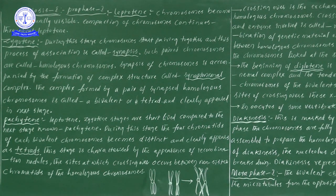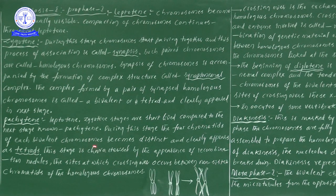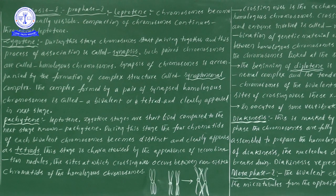During this stage, the four chromatids of each bivalent chromosome become distinct and clearly appear as Tetrads. Now due to this distinction, the chromosomes condensation process continues, and during this stage the four chromatids of chromosomes become distinct and clearly appear as Tetrads. This stage is characterized by the appearance of Recombination Nodules. The main important points to remember in Pachytene are: first, the clear appearance of Tetrads; second, the appearance of Recombination Nodules.